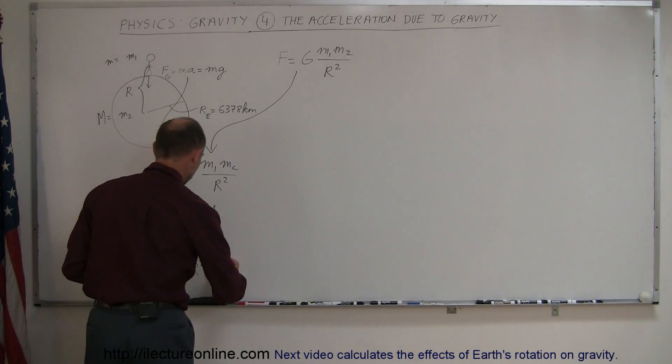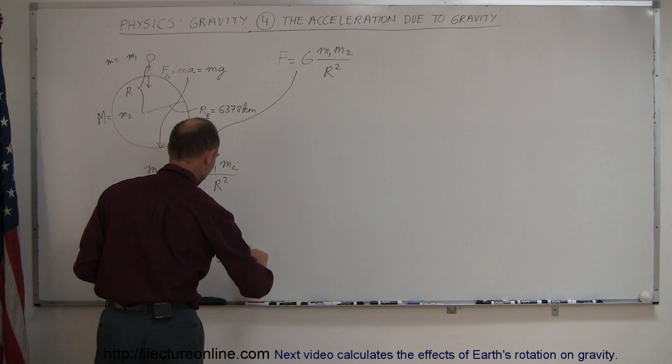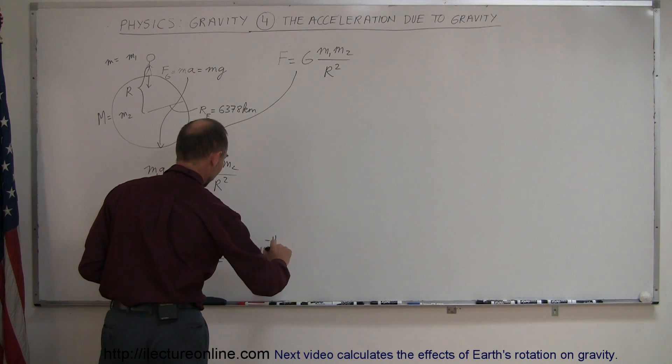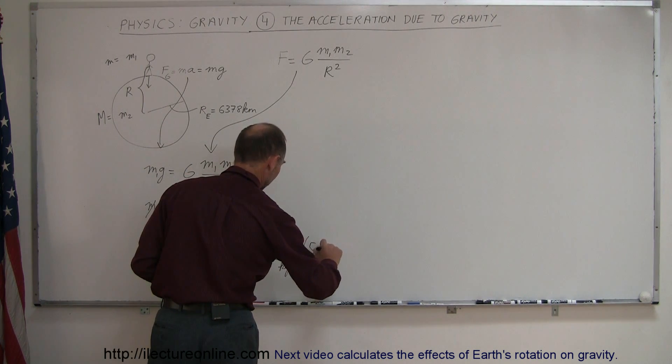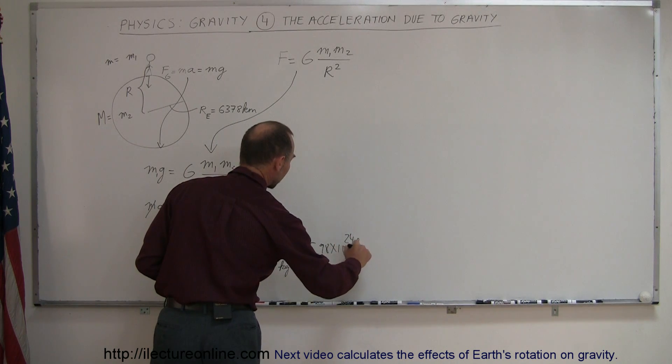When we plug in the numbers, let's see what we get. So this would be 6.67 times 10 to the minus 11 newtons meters squared per kilogram squared, multiply that times the mass of the earth, 5.98 times 10 to the 24th kilogram,